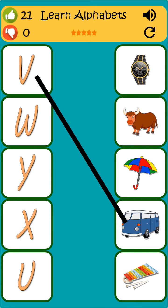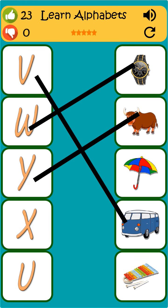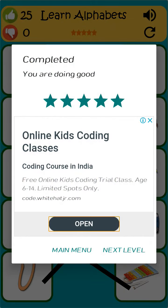V is for van. W is for watch. Y is for yak. X is for xylophone. U is for umbrella.